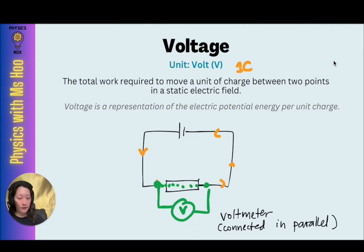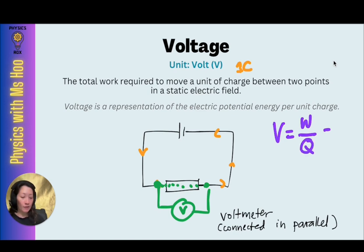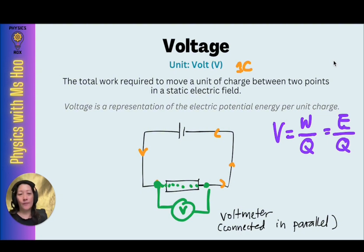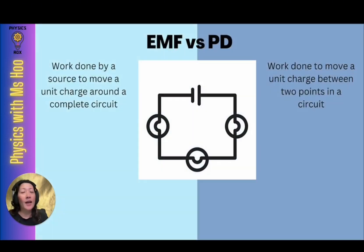The calculation of voltage is how much work is done per unit charge. And because work is a type of energy, it can also be expressed as electrical potential energy divided by the unit charge. Voltage is the general name for this particular physical quantity. EMF and PD are actually types of voltages.